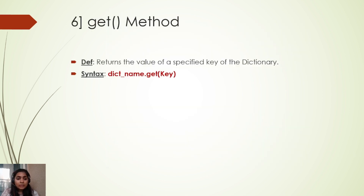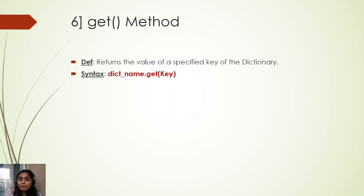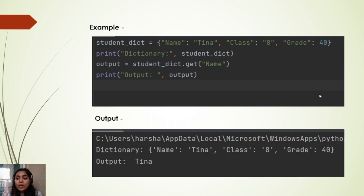There is one more method we will be seeing today, which is the get method. The get method is basically used to return the value of a specified key in the dictionary. Let's say there are multiple keys and we want to extract the value of a certain key — for that purpose we use get. The syntax is: dictionary_name.get(key).